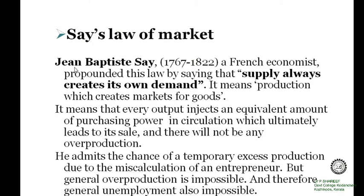The second element is Say's Law of Market. J.B. Say, that is Jean Baptiste Say, a French economist, developed this theory called Say's Law of Market, which states that supply creates its own demand. It means that whatever is produced, equivalent income is generated in the economy and that income will clear the market. There will not be any problem of overproduction or unemployment.